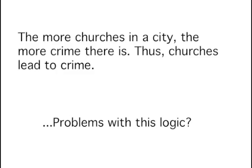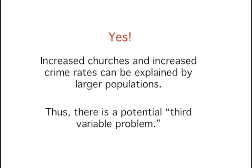Are there any problems with this logic? Yes. A major flaw is that both increased churches and increased crime rates can be explained by larger populations. In bigger cities, there are both more churches and more crime. This problem, which we will discuss in more detail in a later chapter, refers to the third variable problem — namely, a third variable can cause both situations. However, people erroneously believe that there is a causal relationship between the two primary variables, rather than recognize that a third variable can cause both.